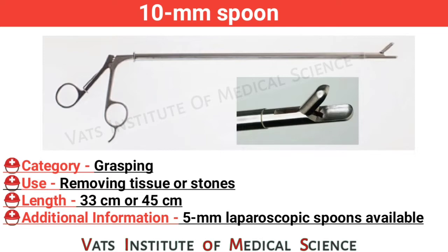10 mm spoon. Category: grasping. Use: removing tissue or stones. Length: 33 cm or 45 cm. Additional information: 5 mm laparoscopic spoon also available.